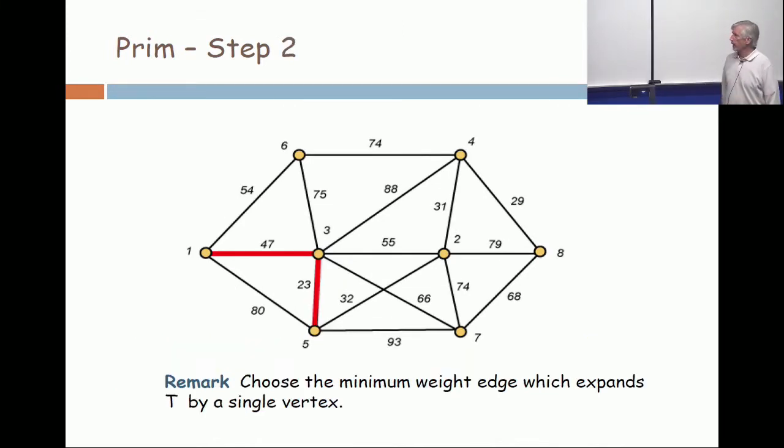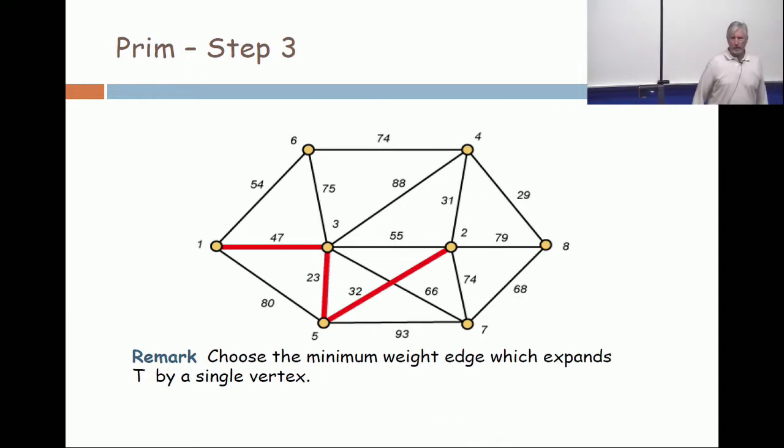What edge do I take next? I heard five to two at a cost of 32. Next. Two to four. Cost of 31. Notice, we're not taking them into order anymore, are we? You're taking a 32. Now we're taking a 31.